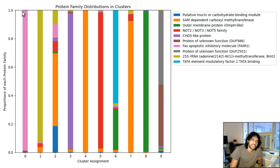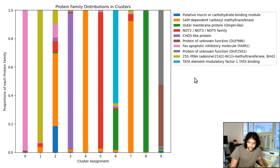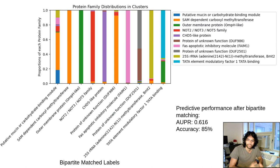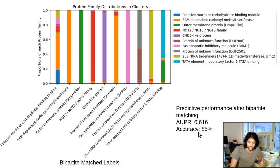Taking a closer look at the distribution of protein families across all cluster assignments, we see that many clusters actually correspond pretty directly to an entire protein family, which is exactly what we'd like to see if we're trying to discover a new protein family — it should be pretty consistent and singled out. We then apply bipartite matching to assign protein family labels to cluster assignments to maximize accuracy, and the maximum accuracy we achieve is around 85%, which is pretty good.